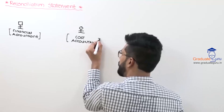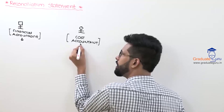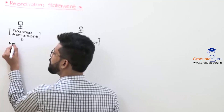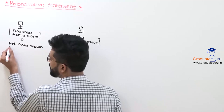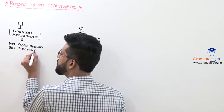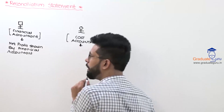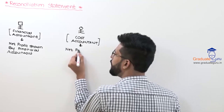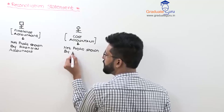The financial accountant prepares a Trading and P&L Account — this gives a profit. The cost accountant prepares a cost sheet or a costing P&L account — this also gives a profit, which we call net profit. So we have net profit shown by the financial accountant and net profit shown by the cost accountant.